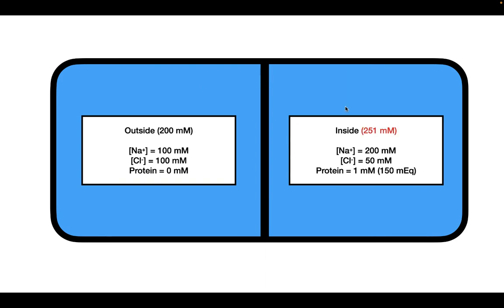An important thing to realize is that when we reach Gibbs-Donnan equilibrium, we do not have equal total concentrations. The total concentration outside is 200 millimolar, while the total concentration inside is 251 millimolar. As a result, the osmotic pressure inside is greater than outside, and water will move from the area of lower solute concentration to the area of higher solute concentration — that is, from outside to inside.